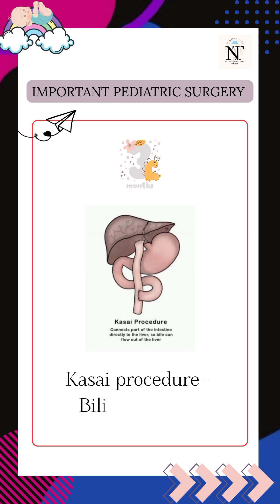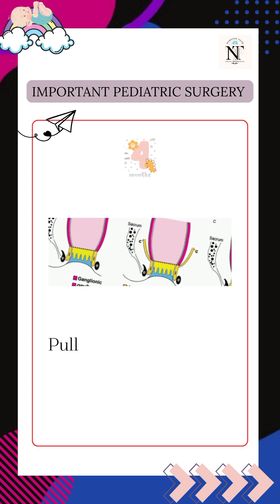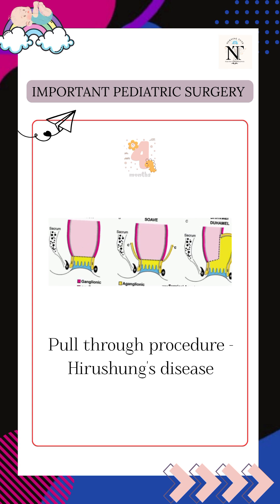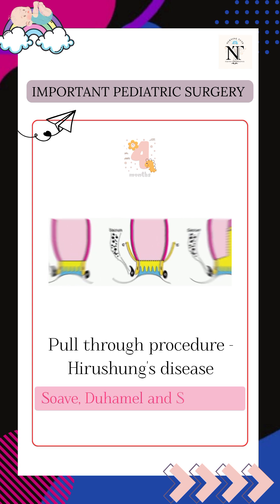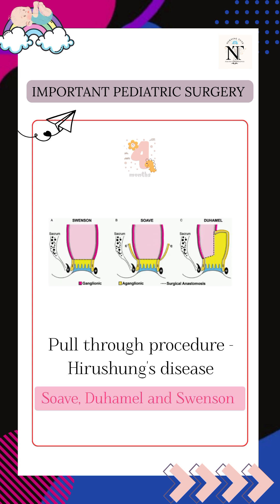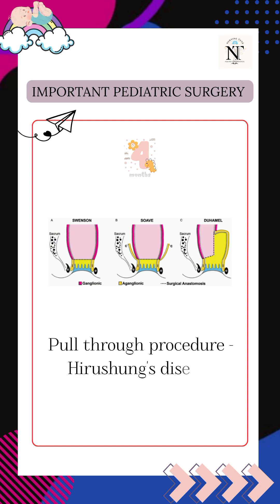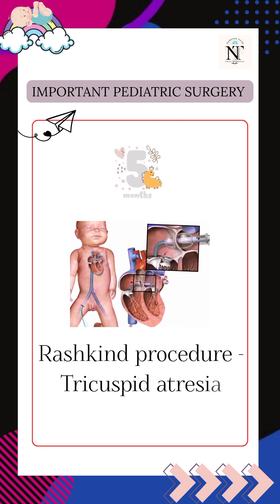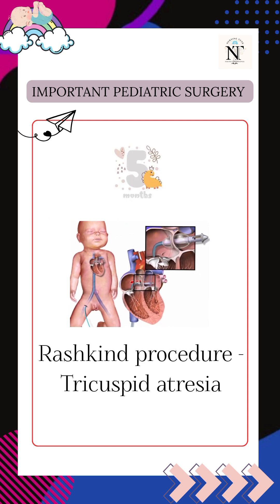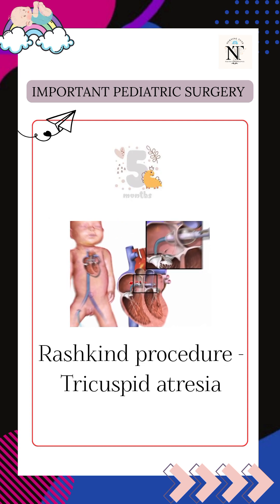restore bile flow. The fourth one is pull-through procedures, such as the Soave and Swenson techniques, used in the treatment of Hirschsprung's disease. The fifth one is the Rashkind procedure, often done in cases of tricuspid atresia or other congenital heart disease to improve oxygenation.